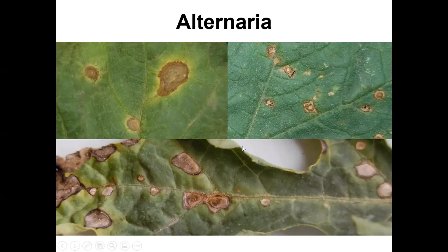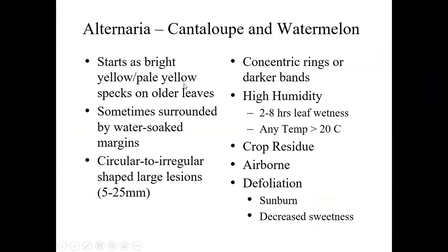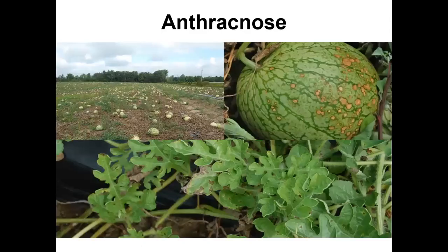The lesions on watermelon are quite a bit smaller than what you see in cantaloupe or cucumbers. Alternaria starts as a bright yellow spot, can be water-soaked, surrounded by a yellow margin, irregular in shape. It survives in crop residue and can also be airborne. If you lose your foliage as a result of alternaria, you can end up with sunburned fruit or decreased sweetness.